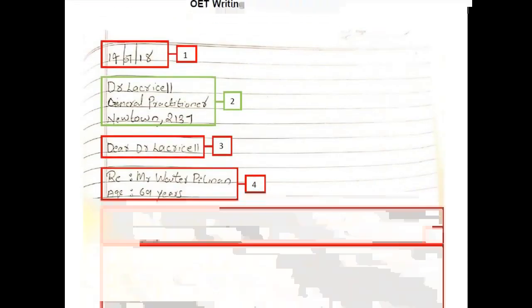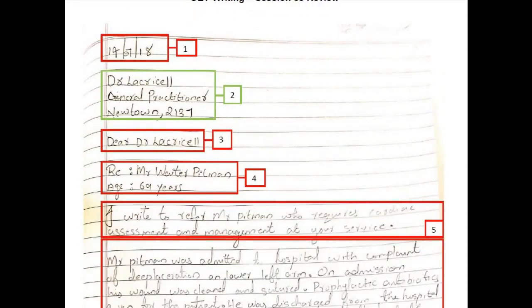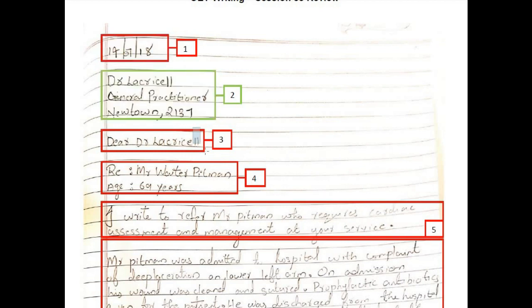Let us see how we can write a letter with the help of a sample letter written by a candidate from UK. The date written is correct but the format is wrong. You must write 14 July, 2018. The address written is correct. In the salutation, the candidate has missed a comma after the name. In the reference, you must write it in a single sentence — Re colon, Mr. Waiter-Pittman, 69 years.